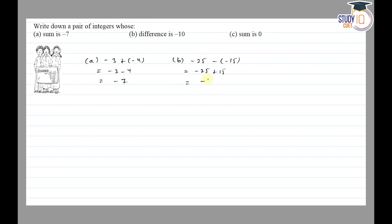For sum is 0: 4 + (-4). So 4 + (-4) is equal to 0. My pairs are: (-3) + (-4) for sum -7, and 4 and -4 for sum 0.